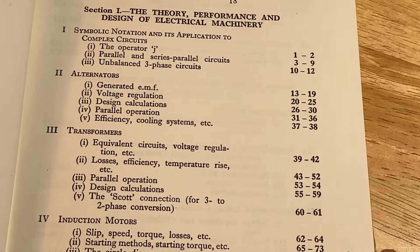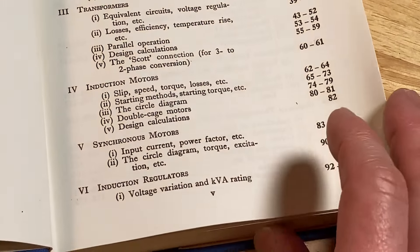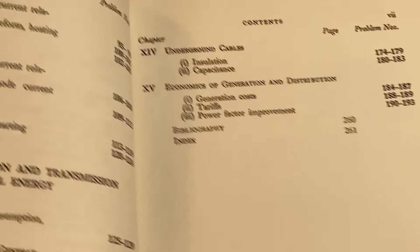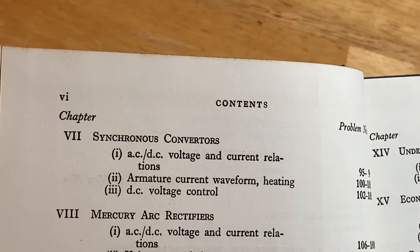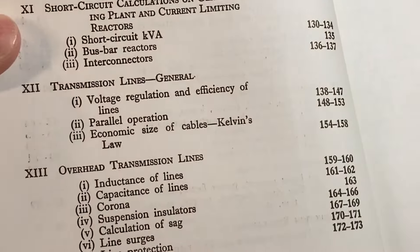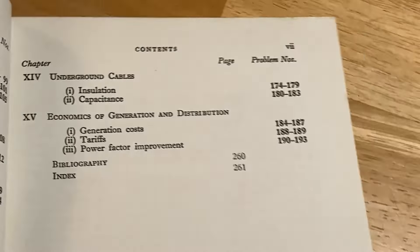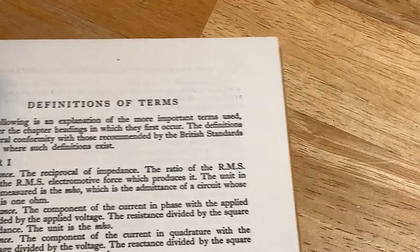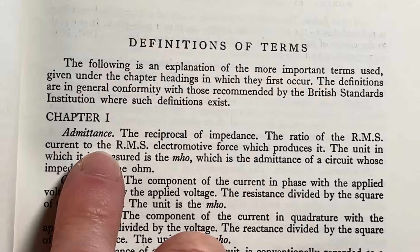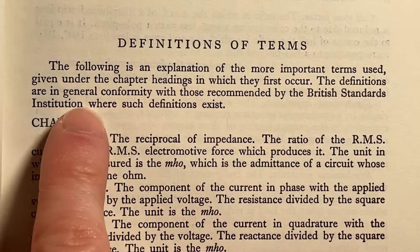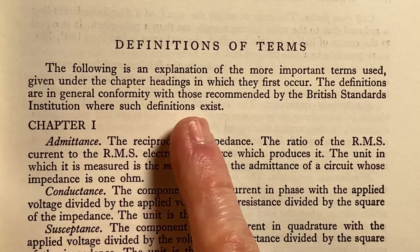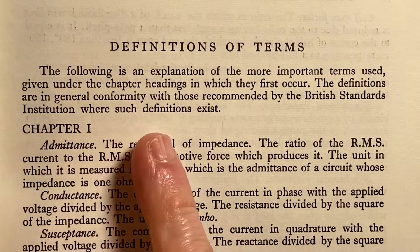You can see some of the topics covered in this book, and then we have some more here — synchronous converters, mercury arc rectifiers. And then we have some more over here. Definitions of terms. Chapter one says: 'The following is an explanation of the more important terms used, given under the chapter headings in which they first occur.'